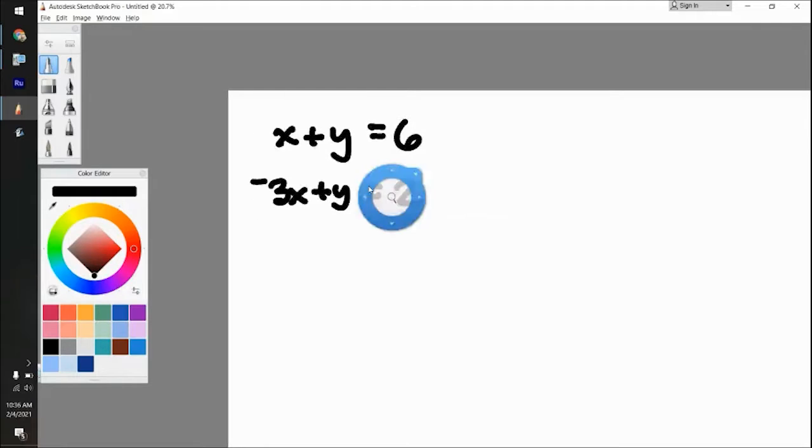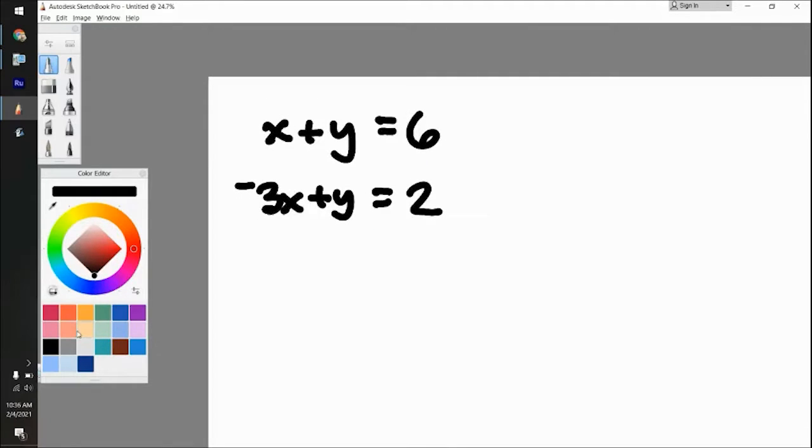Instead of having one equation, it's two, but that's why it's in this unit because it's still related to it. Let's say I had something like this: x plus y equals six, and then I had negative three x plus y equals two. And it would say solve the following systems of equations. That means you should be able to figure out what x equals and what y equals, and then write it as an ordered pair, x comma y.